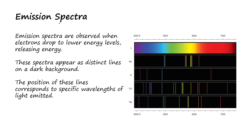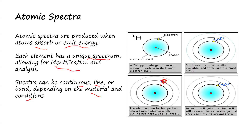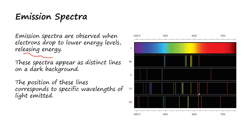Emission spectra are observed when electrons drop to lower energy levels, releasing energy. In the case of emission spectra, electrons initially move from a lower energy level to a higher energy level, and when they get the chance, they release energy to come back to their original state. Emission spectra are observed when electrons drop to lower energy levels by releasing energy.